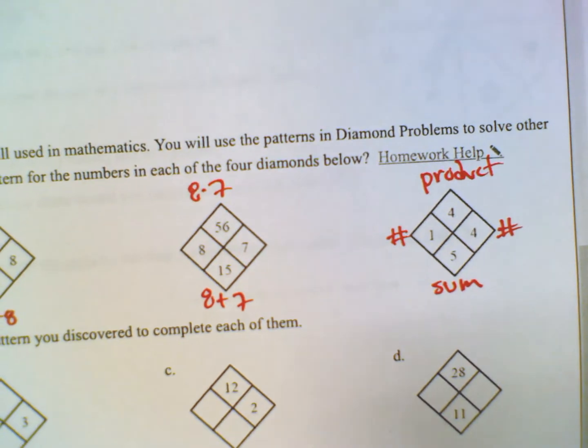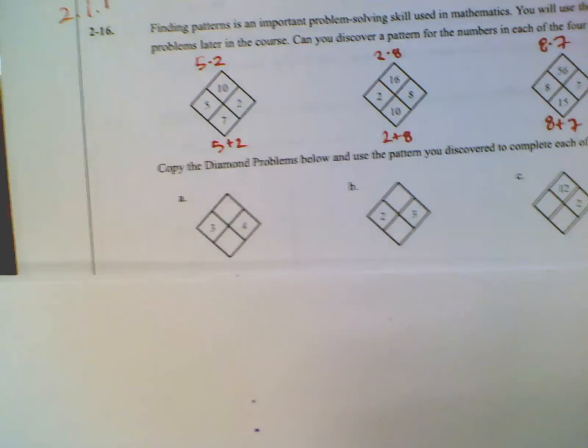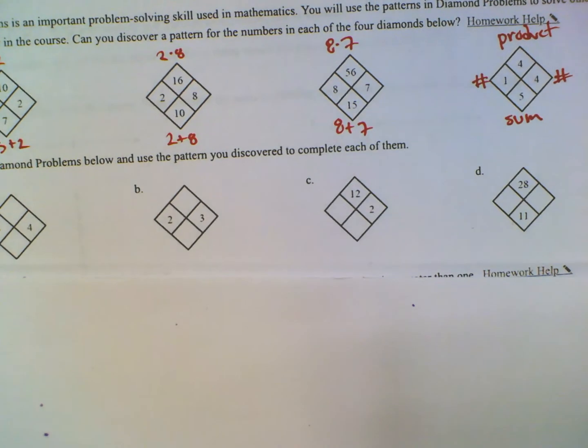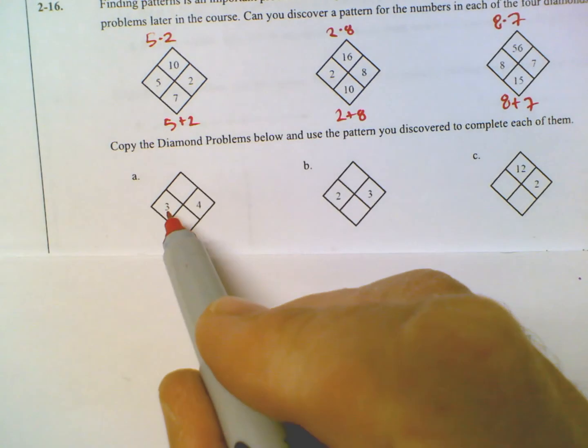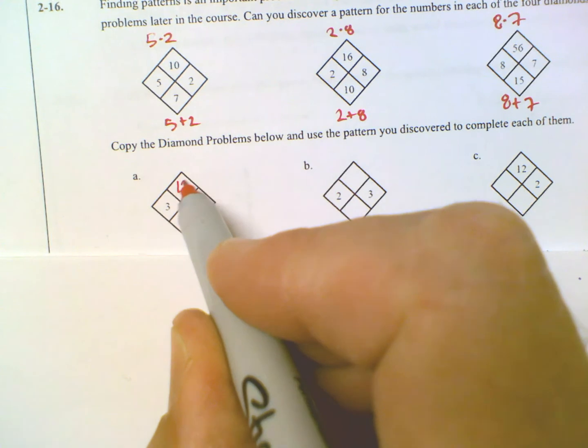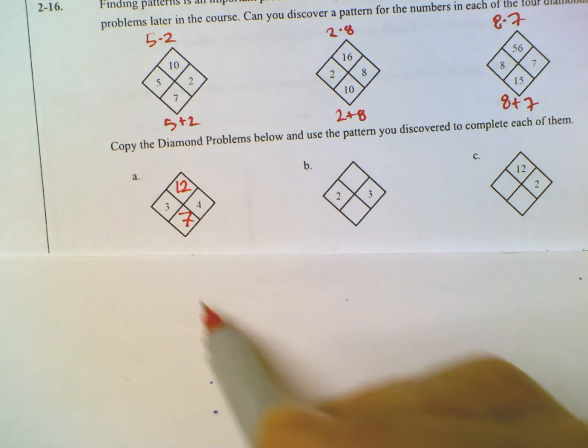So now once we know the pattern, we've got to do each of the questions. So they want us to take and copy these down on our page and complete each diamond problem, right? So the pattern, product on top, sum on the bottom. So if I look at this first one here, 3 and 4. So 3 times 4 is 12 on top. 3 plus 4 is 7 on the bottom.